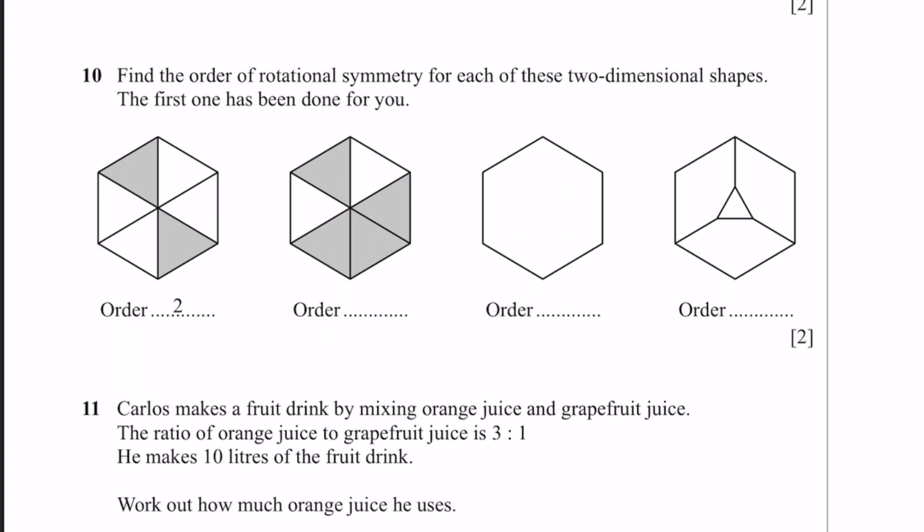Question 10. Find the order of rotational symmetry for each of these two-dimensional shapes. The first one's been done for you, order 2. This one is order 1 because of this irregular shape. Next one is a hexagon, which is order 6. The next one has a triangle in the middle with 3 divisions, and therefore it's order 3. That's the answer.